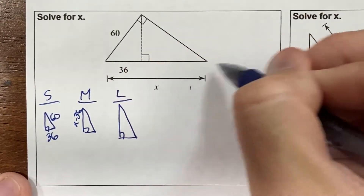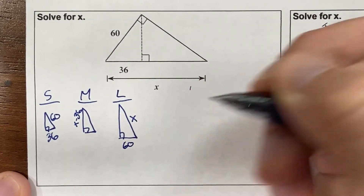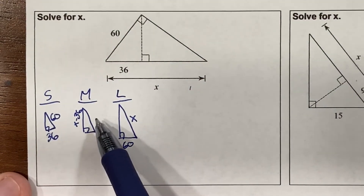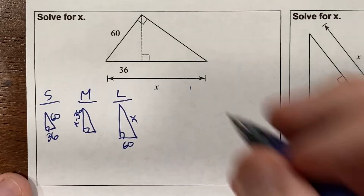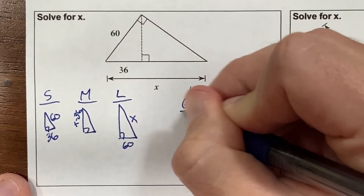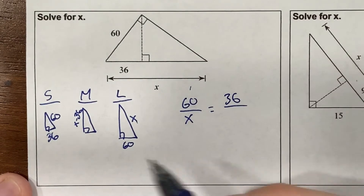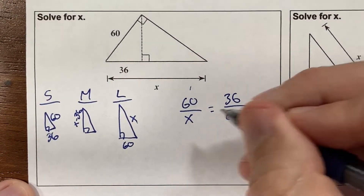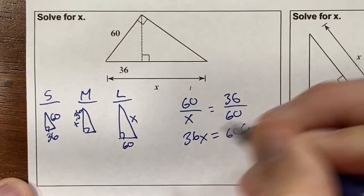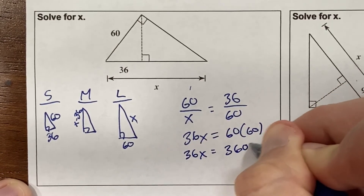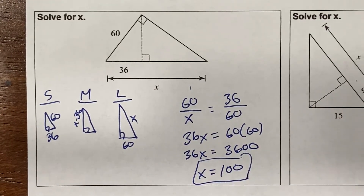For the large triangle, the largest side is x as the hypotenuse and the smallest side is 60. I check which triangles match up — small matches with large since both have the hypotenuse and smallest side. So 60 over x equals 36 over 60. Cross multiplying gives 36x equals 60 times 60, which is 3600. Dividing by 36 gives x equals 100.